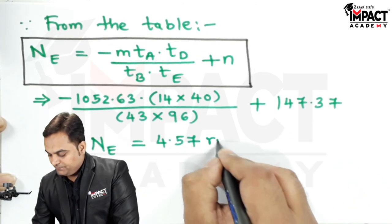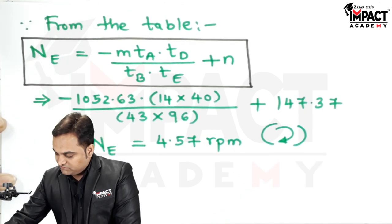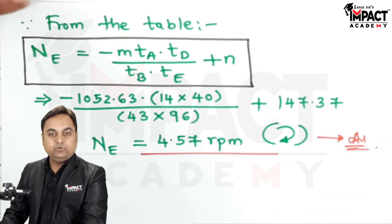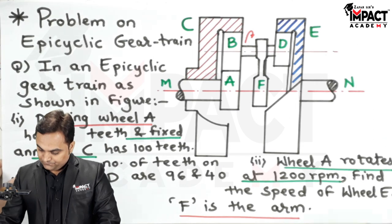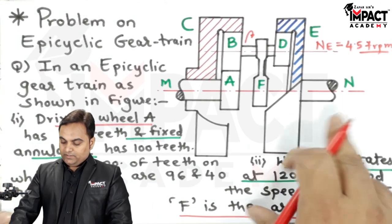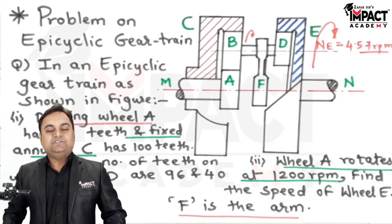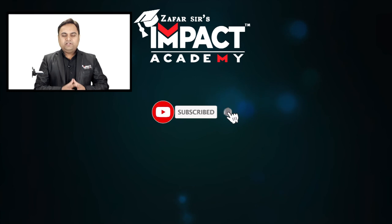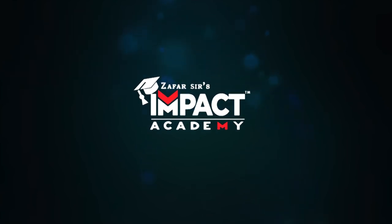Now calculating the speed of gear E using its total motion formula: substituting TA equals 14, TD equals 40, TB equals 43, TE equals 96, and n equals 147.37, the speed of gear E comes out to be 4.57 RPM. The answer is positive, meaning E is rotating in a clockwise manner. The problem is now complete. If you find my videos helpful, please like, share, comment, and subscribe. Thanks for watching.